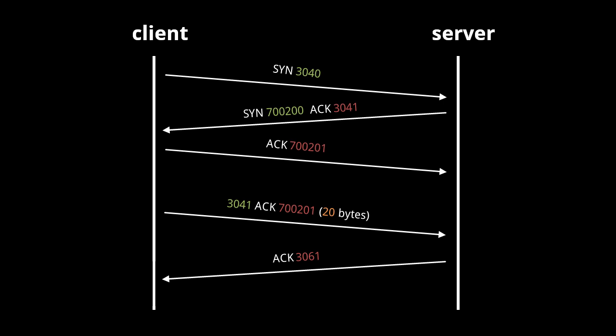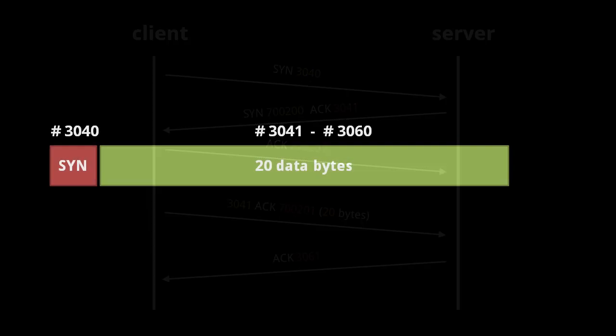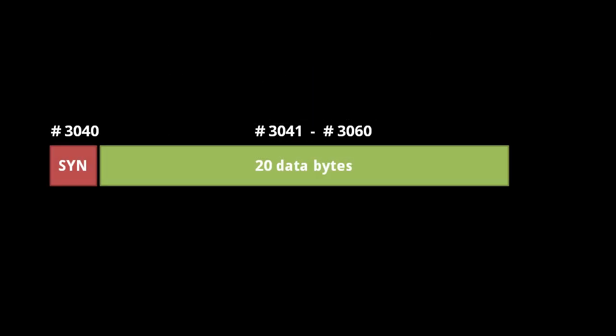Both sides are now ready to exchange data. The client sends a segment with 20 bytes of data, with sequence number 3041, indicating the data starts at byte 3041 of the stream from the client to the server — remembering that the synchronized flag itself was byte 3040. Even though the client already sent acknowledgement number 700201, it sends it again because the acknowledgement number field is included in every segment header. Once receiving the segment, the server responds with acknowledgement number 3061. If the client doesn't get this acknowledgement within the time limit, it will resend the data.